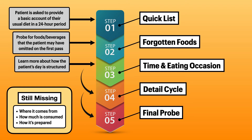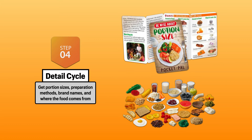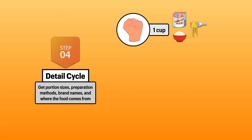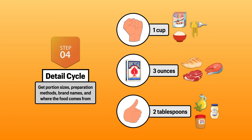The detail cycle is where you gather all of that information. You go back to the beginning of the day and get portion sizes, preparation methods, brand names, and where the food comes from. If you have food models or images to assist with estimating portion sizes, you should use them. If you don't, then just do the best that you can. Simple guides include: your fist is a cup of cereal, rice, or pasta; a deck of cards is 3 ounces of chicken, fish, or beef; and your thumb is 2 tablespoons of oil, peanut butter, or mayonnaise. This way, you can approximate intake even when the patient is unable to visualize their meals using standard units of measurement.